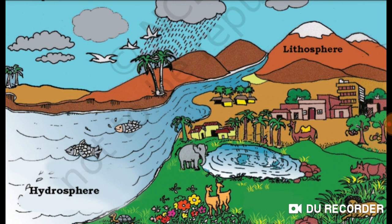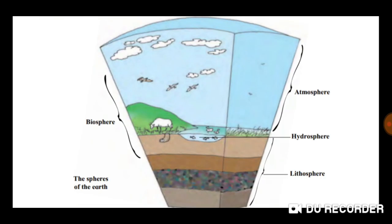The hydrosphere comprises water in all its forms, that is ice, water and water vapor. The biosphere is the narrow zone where we find land, water and air together — as you can see marked here — which contains all forms of life, that is the plant kingdom and the animal kingdom.